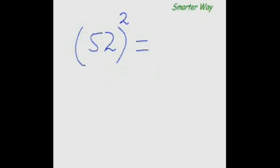Now let me do it the smarter way. 25 plus 2 is 27 and square of 2 is 4. So, 0, 4. This is my answer.